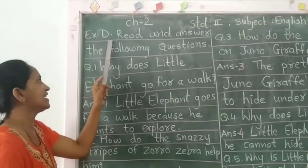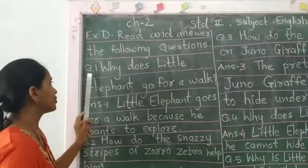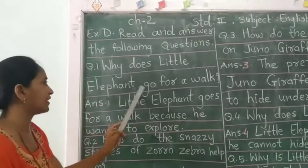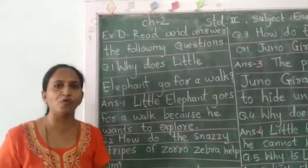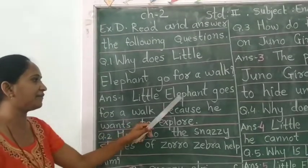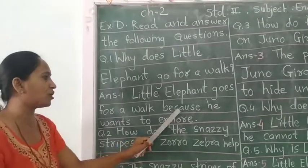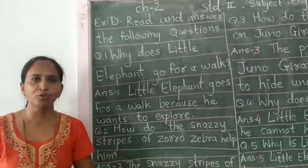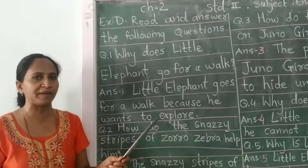Exercise D — read and answer the following questions. Question one: why does little elephant go for a walk? Little elephant क्यों walk करने जाता है? Answer one: little elephant goes for a walk because he wants to explore — यानि वो कुछ discover करना जाता है, इसीलिए वो बाहर जाता है।